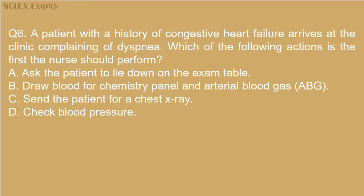Question 6: A patient with a history of congestive heart failure arrives at the clinic complaining of dyspnea. Which of the following actions is the first the nurse should perform? A. Ask the patient to lie down on the exam table. B. Draw blood for chemistry panel and arterial blood gas (ABG). C. Send the patient for a chest x-ray. D. Check blood pressure.